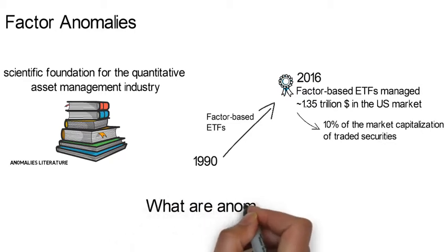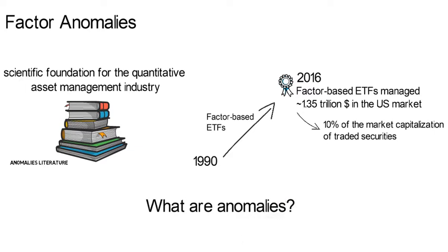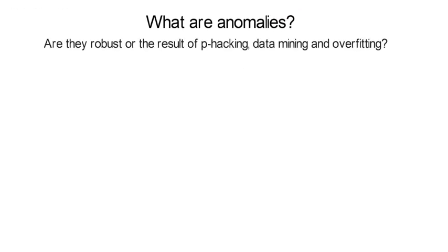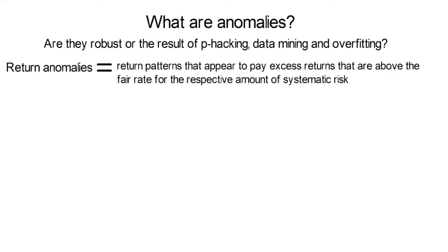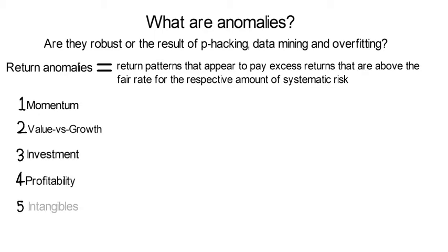So what are anomalies? Are they robust, or the result of p-hacking, data mining and overfitting? Return anomalies are return patterns that appear to pay excess returns above the fair rate for the respective amount of systematic risk. These are alphas. Popular anomalies are momentum, value versus growth, investment, profitability, intangibles, and several trading frictions.